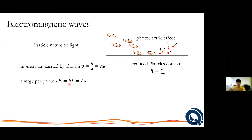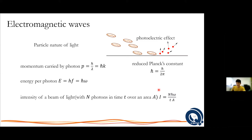The intensity in a beam of light can be expressed as just counting the number of photons, each carrying energy h-bar omega, per unit time and per unit area. To make a beam more intense, you either send more photons in, send it in a shorter pulse, or squeeze it down to a small area.